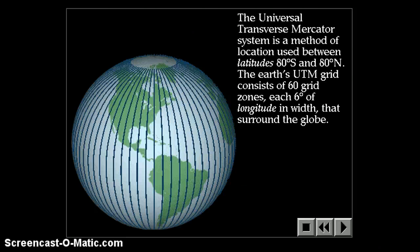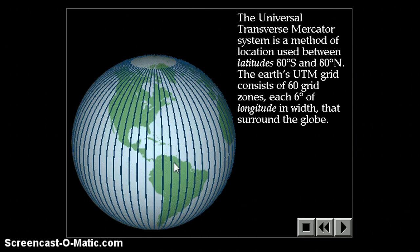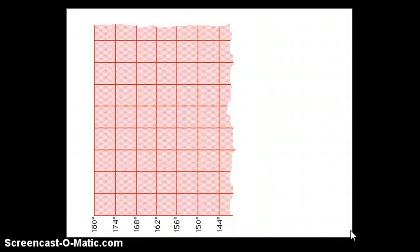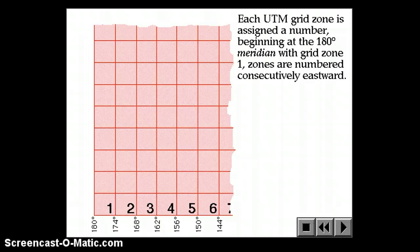The UTM system takes all the earth between 80 south and 80 north and puts a grid on top of it. The grid is divided into 60 sections. Six degrees of longitude are in each section. The UTM grid zone is assigned a number beginning at 180 meridian. The grid zone is 1, and then they're consecutively numbered eastward.